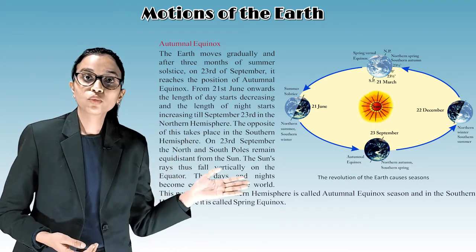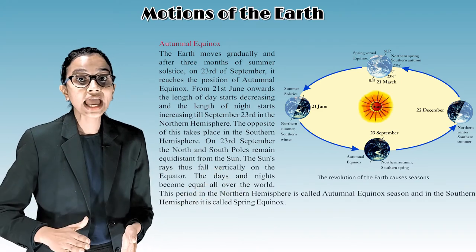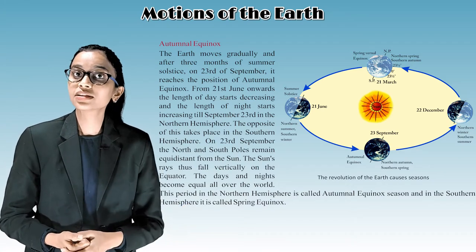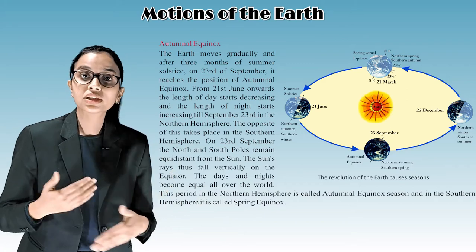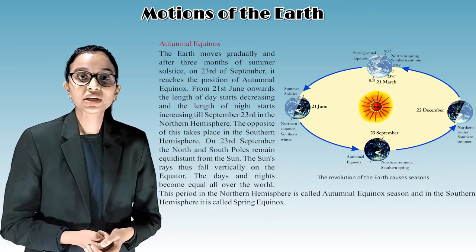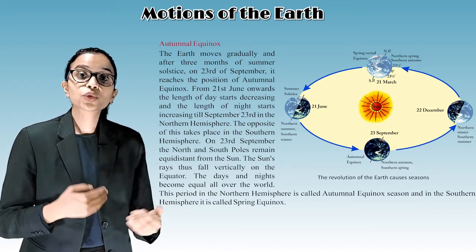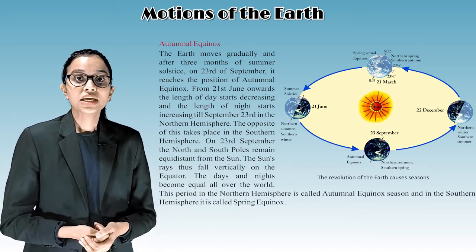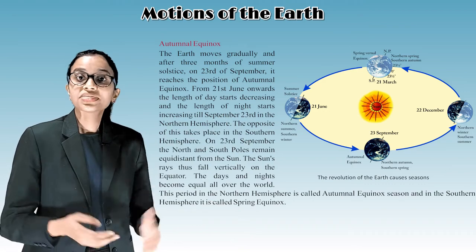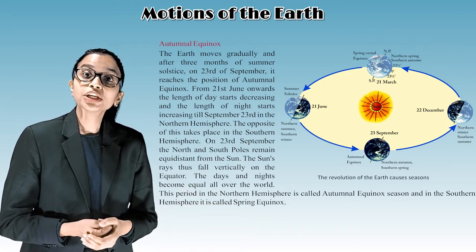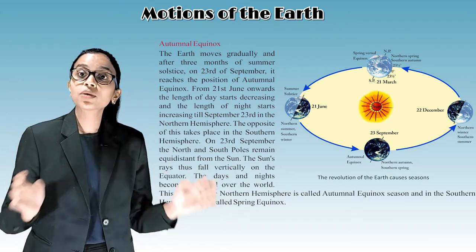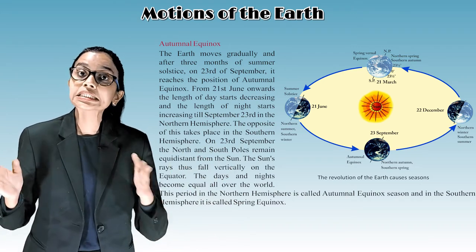From 21st June onwards, the length of the day starts decreasing and the length of the night starts increasing until September 23rd in the northern hemisphere. The opposite takes place in the southern hemisphere. On 23rd September, the north and south poles remain equidistant from the sun, and the sun's rays fall vertically on the equator. The day and night become equal all over the world.